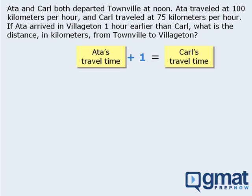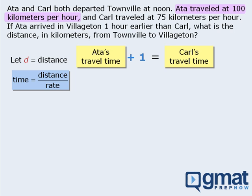Let's begin with our first word equation. Our goal here is to replace Ada's travel time and Carl's travel time with algebraic expressions and then solve the resulting equation. To do this, we will use the fact that travel time equals distance over speed. We are told that Ada's speed was 100 km/h, but we don't know the distance — in fact, the goal is to find the distance. So let's let D represent the distance from Townville to Villagetan. Ada's travel time equals D divided by 100 km/h, and to this time we will add 1 so that it equals Carl's travel time. Since Carl's speed was 75 km/h, his travel time equals D divided by 75 km/h.